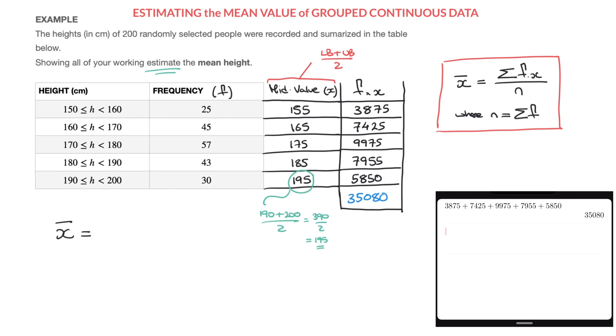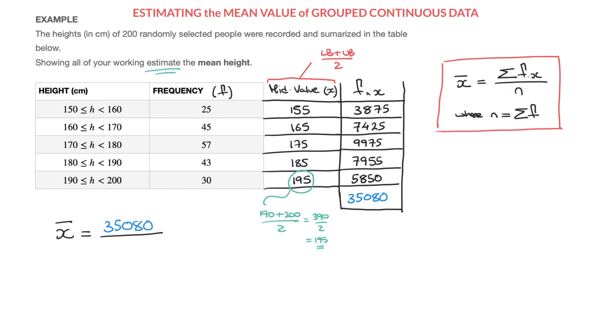And so I'll write that, and I'll stick to that color as well, 35,080 over the n that we see here. And I wrote underneath that, that n is equal to the sum of all the f's.